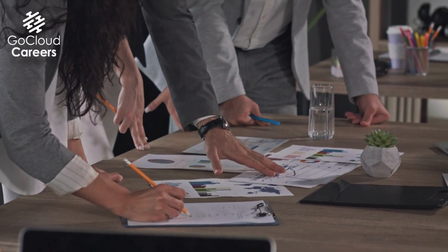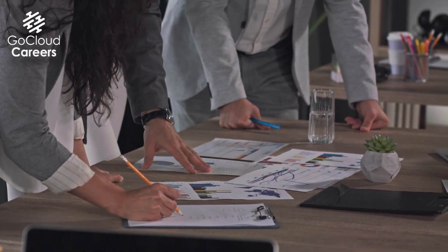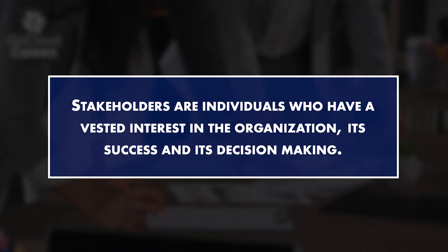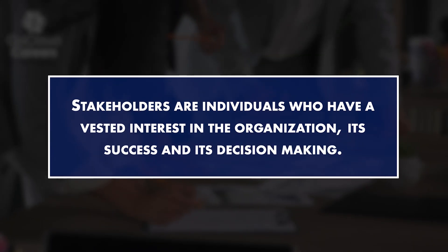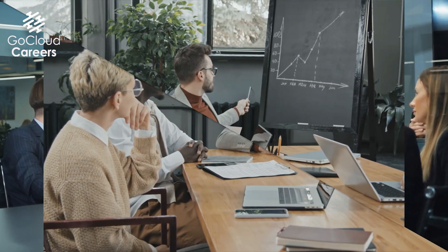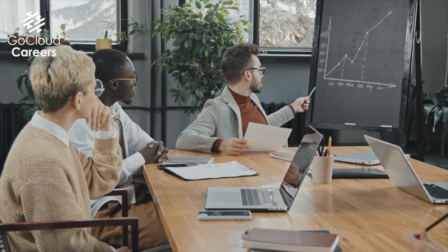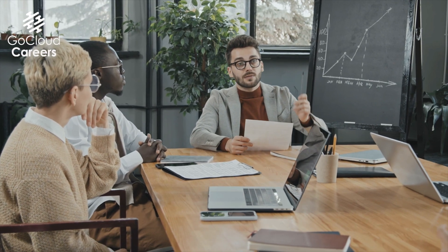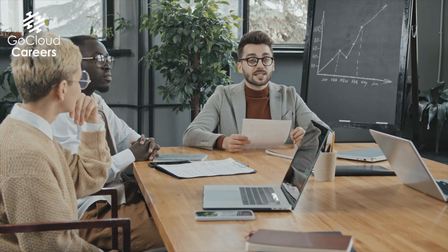Next, we need to conduct a formal stakeholder review of the new data architecture. Stakeholders are individuals who have a vested interest in the organization, its success, and its decision-making. We need to confirm that the new data architecture satisfies all stakeholder requirements. Architectural choices may help one part of the organization and place new challenges on another, so we will likely need to negotiate between stakeholders to reach the final solution and get buy-in so they will support the architectural changes when ultimately implemented.